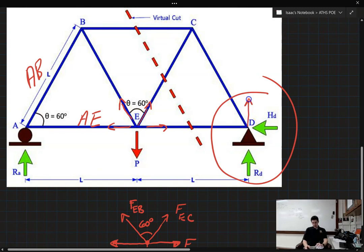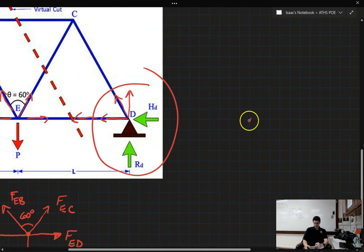So, joint D has a reaction force up. It has a reaction force that way. And then it's got its member forces as well. So, we've actually got two forces that are to the left here. So, I'll draw that one over here. So, here's our dot for our free body diagram.